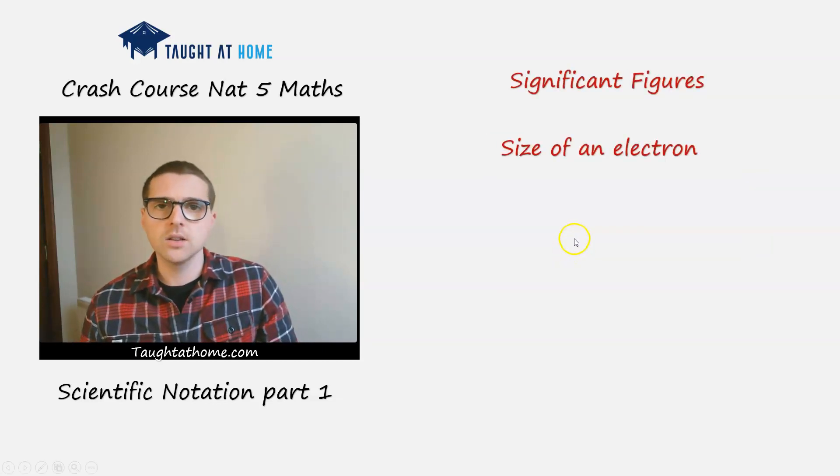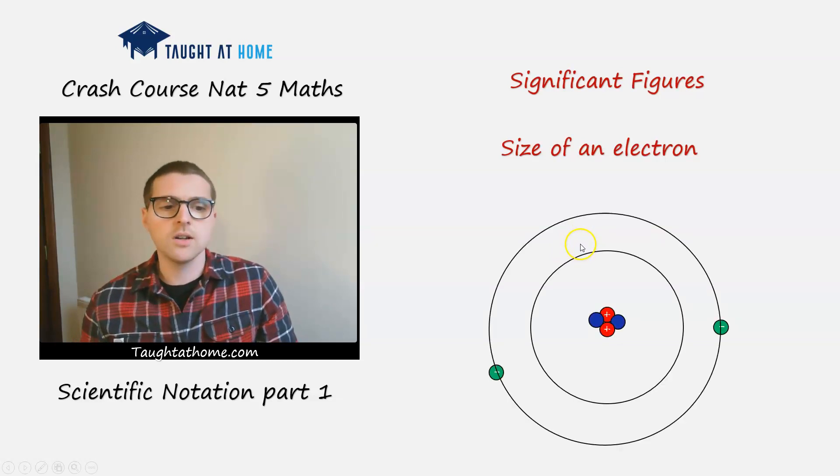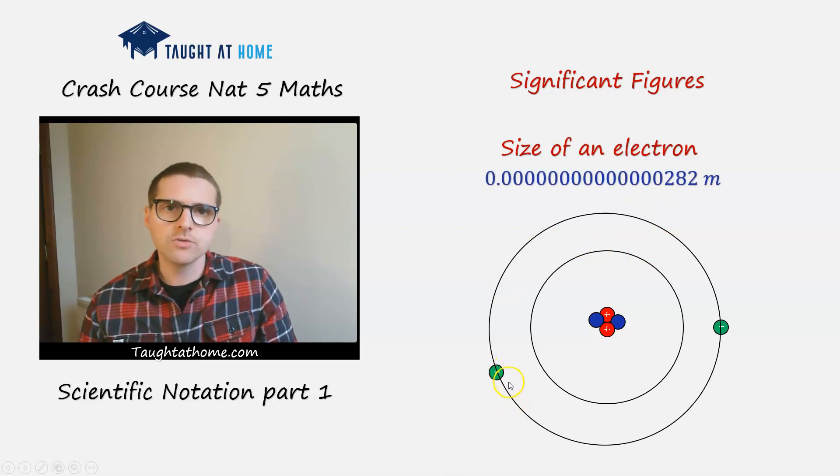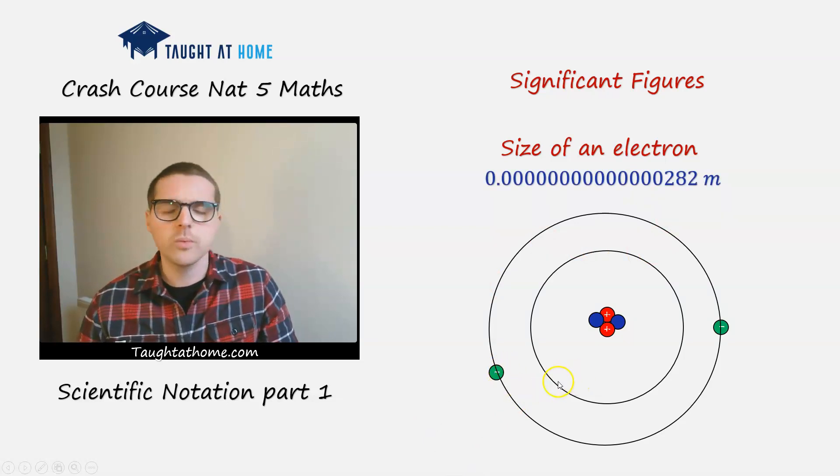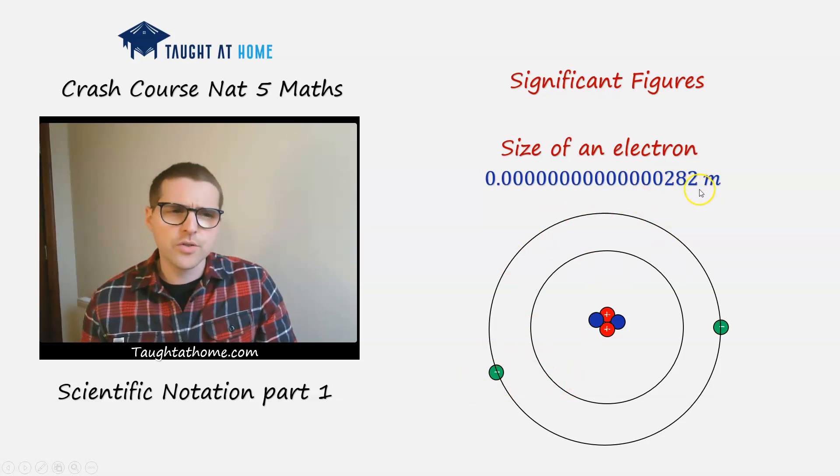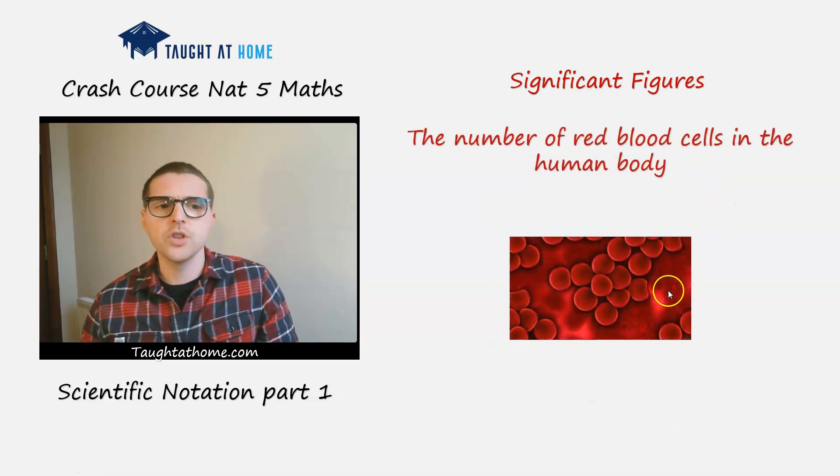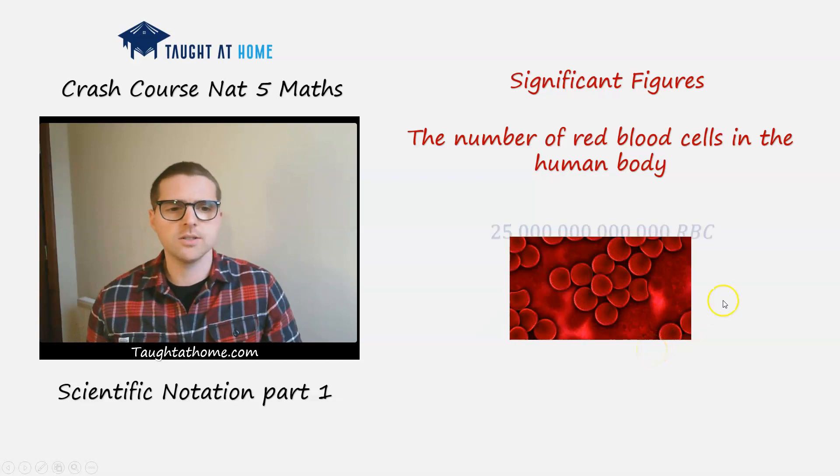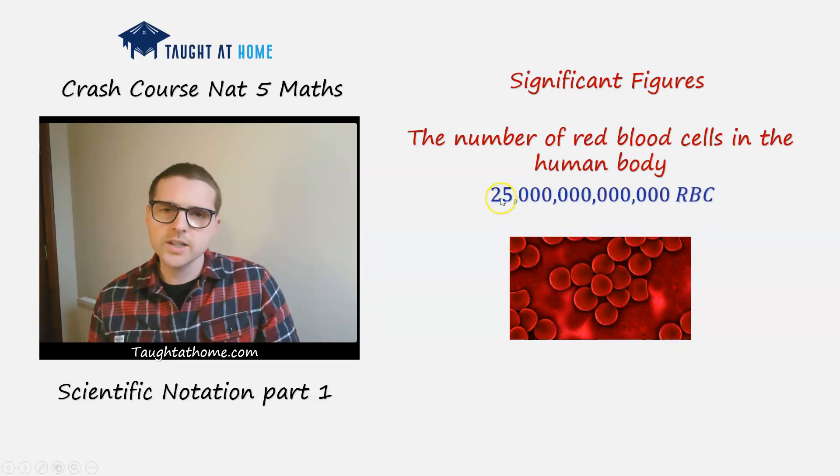So now let's look at some numbers using significant figures. The size of an electron here on the model, we know that the size of an electron is this really really really small number in meters. And we know that we've got three significant figures here. The number of red blood cells in the human body, huge number, trillions. So we've got two significant figures here.